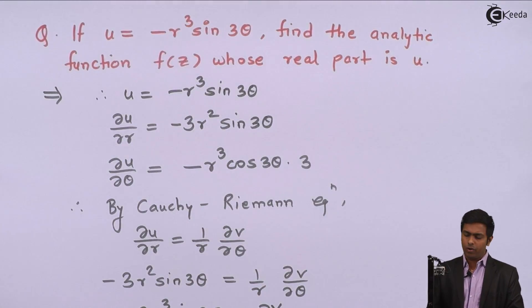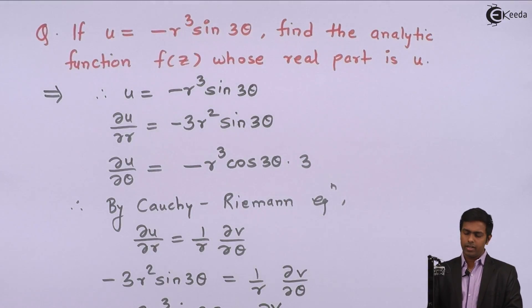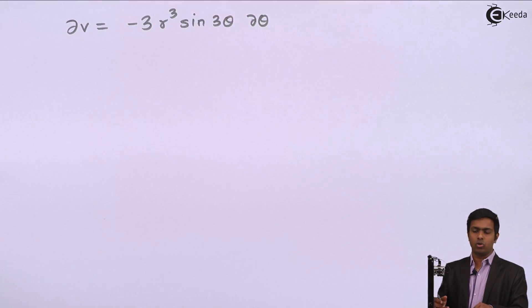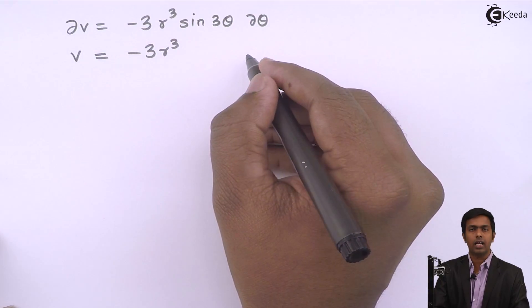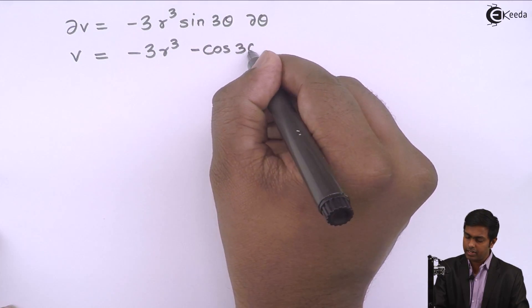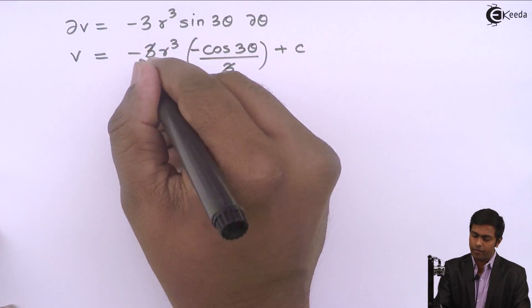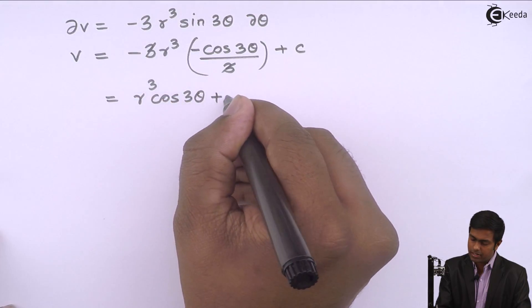To get the value of V, we separate variables: dV = -3R³ sin(3θ) dθ. Integrating both sides, V = -3R³ times the integral of sin(3θ), which is -cos(3θ)/3, plus C. Cancelling the 3s, we get V = R³ cos(3θ) + C.